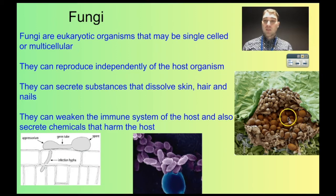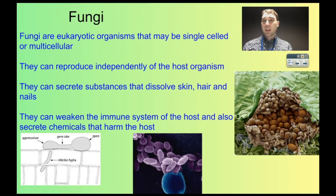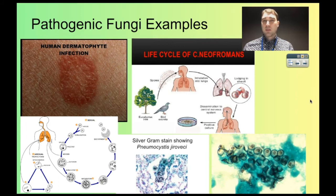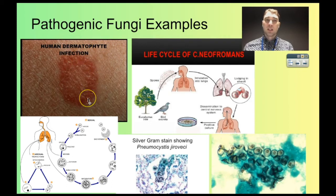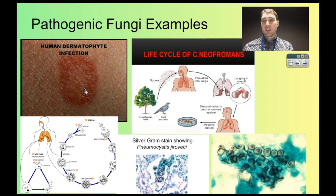This is a rust fungus infecting a leaf — we can see spores being produced from the fungus inside the plant. Here are some examples of pathogenic fungi. This is ringworm — even though it's not caused by a worm, it's caused by a fungus called a dermatophyte. You get a fungal infection of the skin where the fungus is growing inside the skin, dissolving away compounds inside the skin and growing from there.